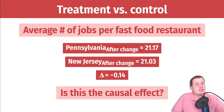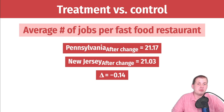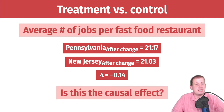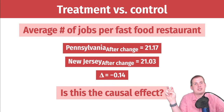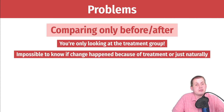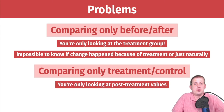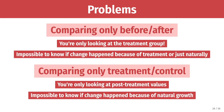That treatment-versus-control comparison is also not a causal effect, because there's no pre-level to compare with — maybe both states went up or both went down. We need both the before-and-after comparison and the treatment-and-control comparison simultaneously to get the causal effect. If you compare only before and after, it's impossible to know if any change happened because of the minimum wage or just because the economy was changing nationwide. If you compare only treatment and control, you don't know what happened before or whether any difference reflects natural growth across groups.